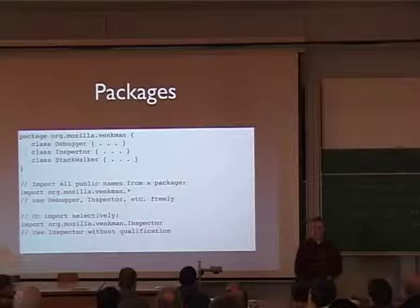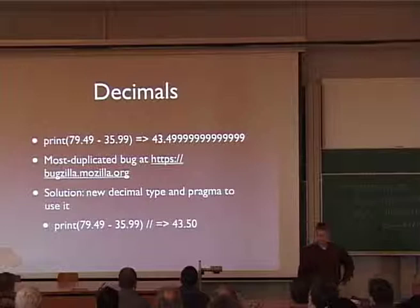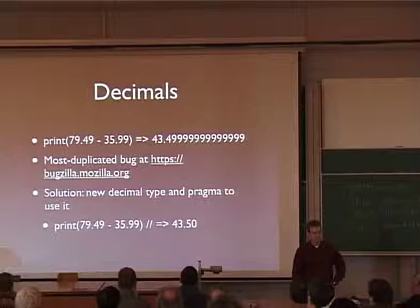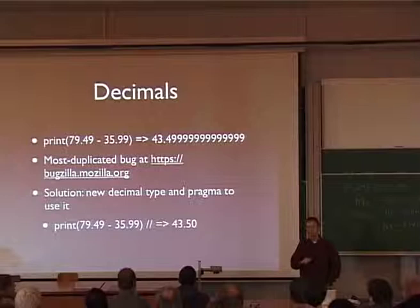You don't want to make decimal mistakes. I bring this up because this is one of the most duplicated bugs in Bugzilla — why the heck is 7.49 minus 35.99 equal to that number. So there's a new decimal type that will be implemented. There are a long number of other small features in JavaScript that improve a lot of these sorts of issues — issues that people have to bang their heads on over and over again and work around in the browser.